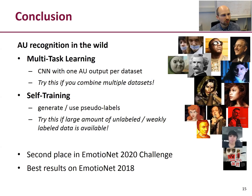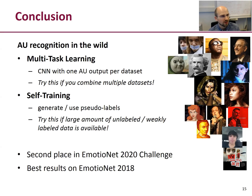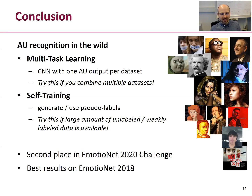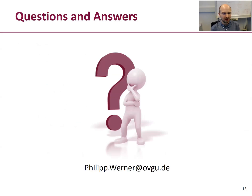In conclusion, we did action unit recognition in the wild with multitask learning and self-training. Multitask learning in our context means using a CNN with one action unit output per dataset. Self-training means generating and using pseudolabels. We recommend trying multitask learning when combining multiple datasets, and self-training when a large amount of unlabeled or weakly labeled data is available. With our approach, we reached second place in the EmotioNet 2020 challenge and achieved the best results on the EmotioNet 2018 data known so far. Thank you very much for your attention.